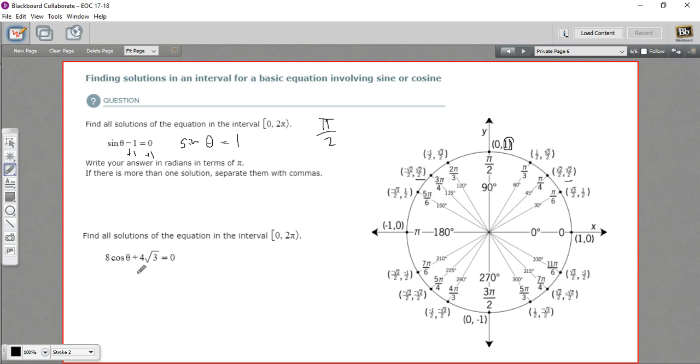But do the algebra first to solve for the cosine. So I'm going to subtract 4 times the √3 from both sides. That gives me 8 times the cosine of theta equals negative 4 times the √3.